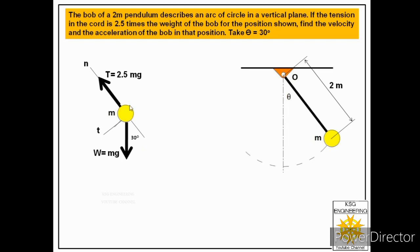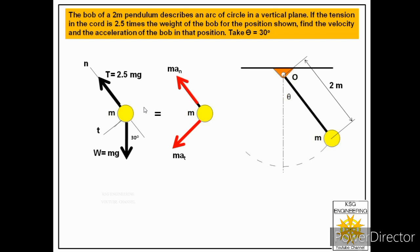These are the forces acting on the bob. Since the bob is in motion, these forces produce two types of acceleration: one tangential acceleration tangent to the path, and one normal acceleration directed towards the center. We apply summation of Ft equals m·at for the tangential direction, and summation of Fn equals m·an for the normal direction. Let us first use summation Ft equals m·at.